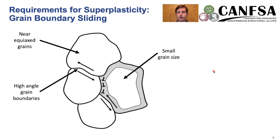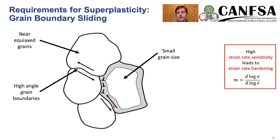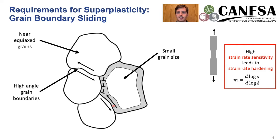There are a few requirements for grain boundary sliding, which is the main mechanism of superplasticity: near equiaxed grains, high angle grain boundaries, and a small grain size such that diffusion can happen on the order of the grain size. The main mechanism for high tensile elongations is from a high strain rate sensitivity, which leads to strain rate hardening. That means if we pull a sample in tension, the sample will elongate until strain starts to localize and then continue to strain without rapid growth of a single neck that would lead to failure.